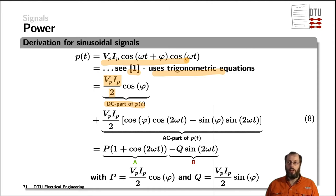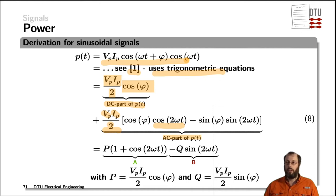We also have the further time-independent parameter cosine phi. Then we have a time-dependent part of the instantaneous power P(t) given here. The AC part has the same amplitude as the DC part — the peak voltage times the current peak divided by a factor of two. Then a cosinusoidal waveform appears at twice the frequency of the original signals, and a sinusoidal waveform also appears at twice the frequency. The cosine is weighted by the cosine of phi, and the sinusoidal time-dependent part is weighted with the sine of the phase phi.